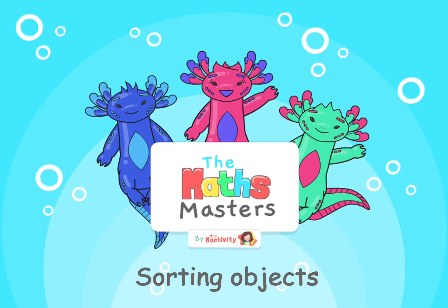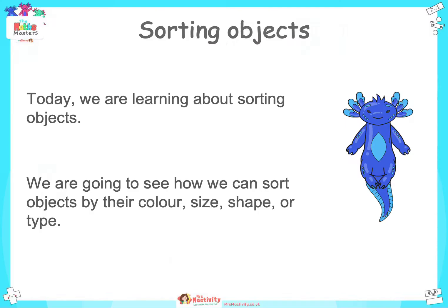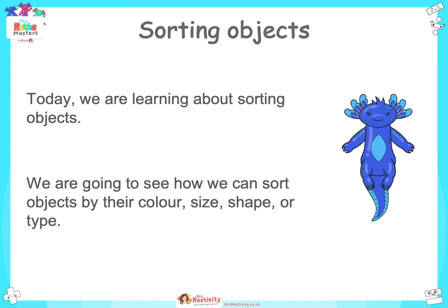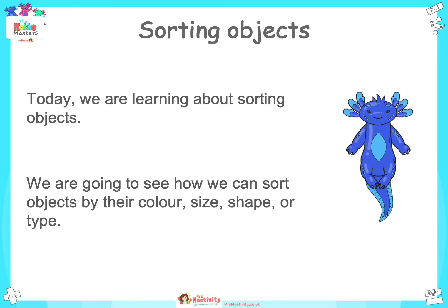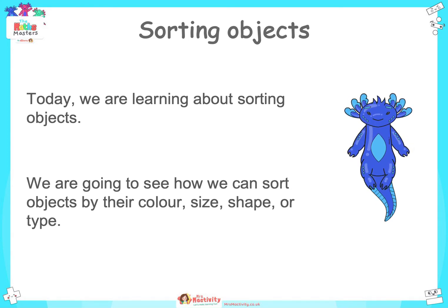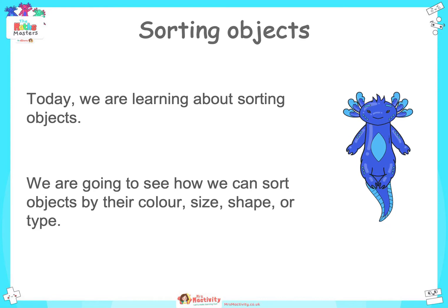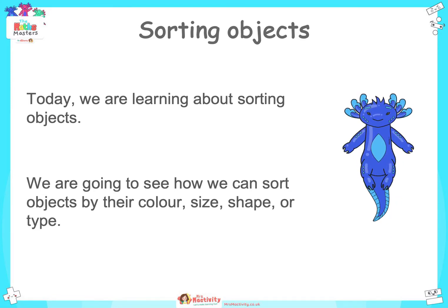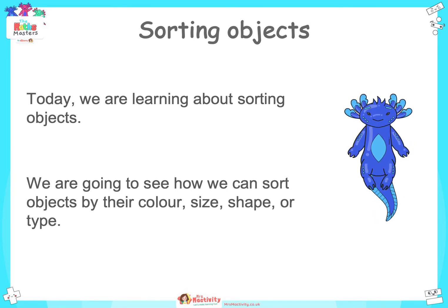The Maths Masters: Sorting Objects. Today we are learning about sorting objects. We are going to see how we can sort objects by their colour, size, shape or type. Sorting objects means sorting them into groups. We use sorting every day when we tidy toys away into different boxes, animals are kept in different groups in fields, and children are sorted into different classes and groups.